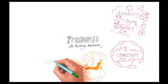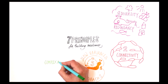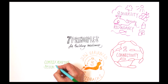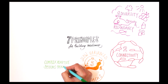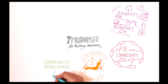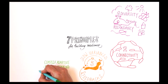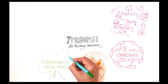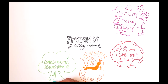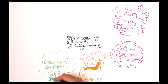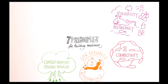Principle 4: Foster complex adaptive systems thinking. Complex adaptive systems thinking means accepting that within a social-ecological system, several connections are occurring at the same time on different levels. It also means accepting unpredictability and uncertainty, and acknowledging a multitude of perspectives.